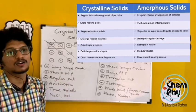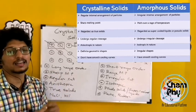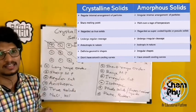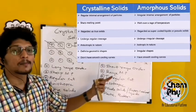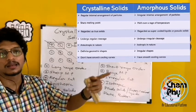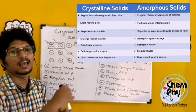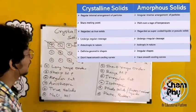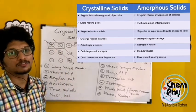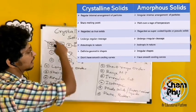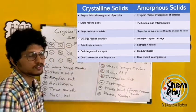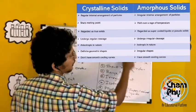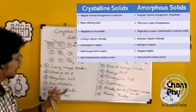In the case of crystalline solids, the particles are cleaved along regular planes giving a regular cut, while amorphous solids are cleaved along irregular planes. Regarding anisotropy and isotropy: electrical conductivity and refractive index are different in different directions for crystalline solids (anisotropic), while for amorphous solids they are the same in all directions (isotropic).